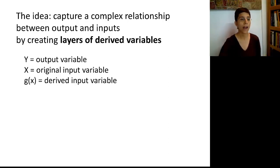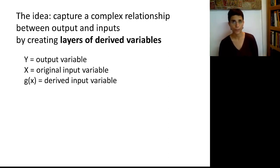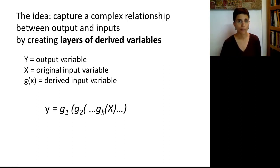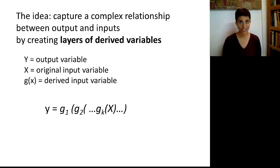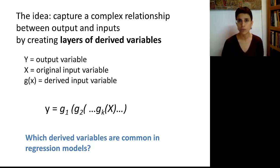The key idea behind a neural net is that we're trying to capture complex relationships between an output and a bunch of inputs using derived variables, or transformations. If we use the ordinary notation of y to denote the output and x to denote a predictor, we'll also use g of x, which refers to a derived input variable. For example, if we're looking at the logarithm of x, then g is simply the logarithm function. A neural net models y as a derived variable of a derived variable of a derived variable of the x's — that's why it can capture very complex relationships.